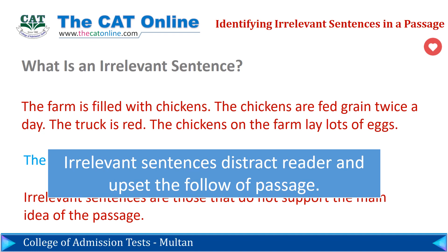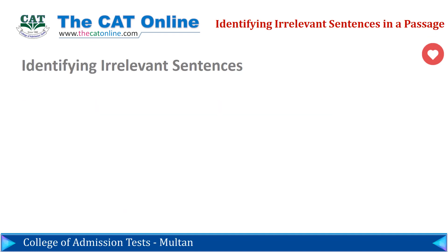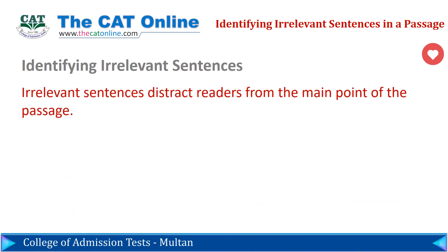Now that we know what irrelevant sentences are, let's take a closer look at ways we can identify them. Irrelevant sentences distract readers from the main point of the passage because they do not relate to or support the main idea. Therefore, it is necessary to avoid using irrelevant sentences in writing and to be able to spot them as a reader. The simplest way to identify irrelevant sentences in a passage is to ask yourself the following three questions.